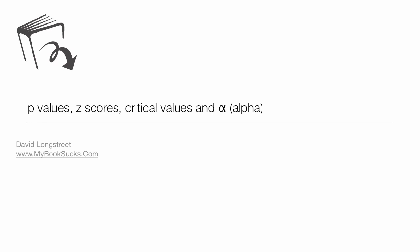In this video, I'm going to discuss a few items that are really confusing to students. I'm going to discuss p-values, alpha, z-scores, and critical values, commonalities and differences between all these.